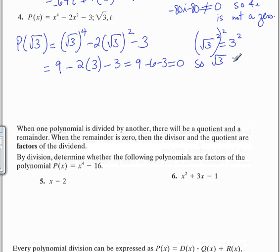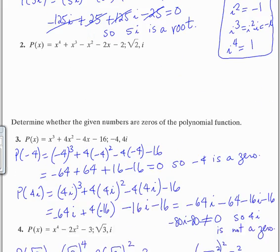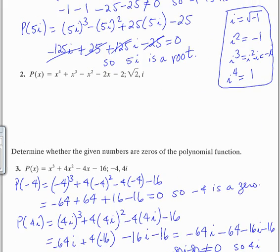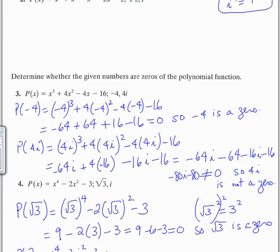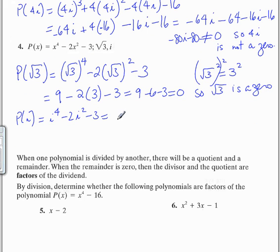So √3 is a zero of the polynomial. Now let's find P(i) — it's i to the 4th minus 2i squared minus 3. Remember, i to the 4th is 1, and i squared is negative 1. So that's 1 minus 2 times negative 1, which is plus 2 minus 3. This is also equal to 0, so i is a zero as well.